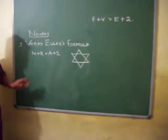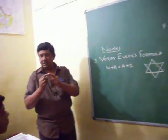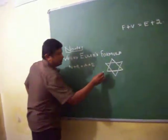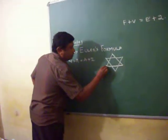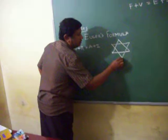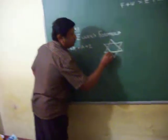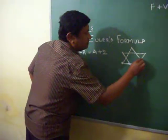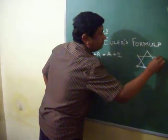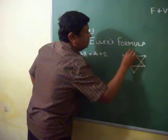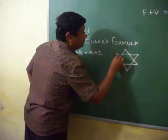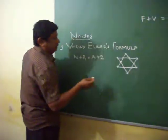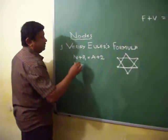Nodes means the two lines which are touching and joining point. So counting the joining points: 1, 2, 3, 4, 5, 6, 7, 8, 9, 10, 11. So 11 nodes we have.